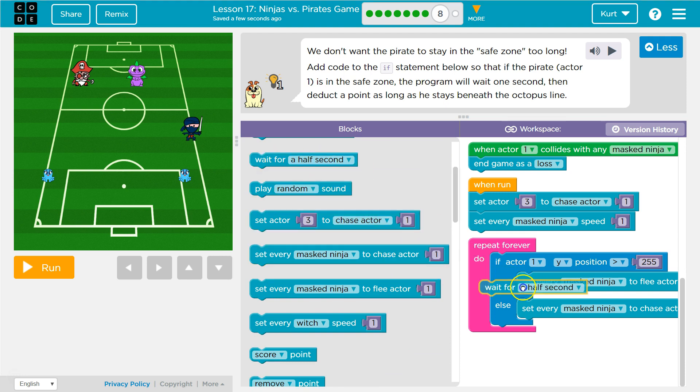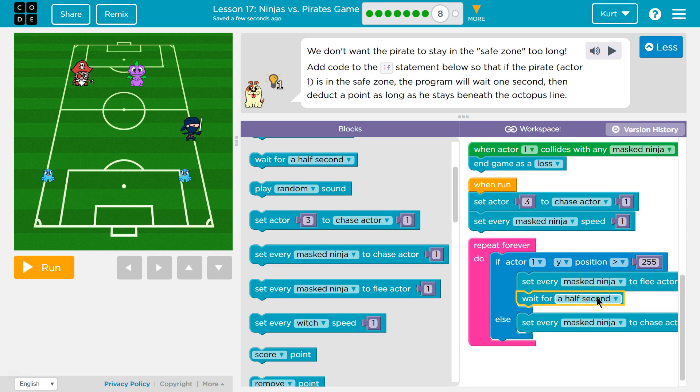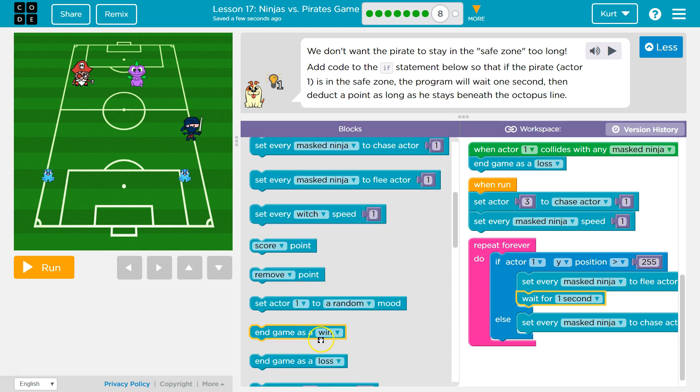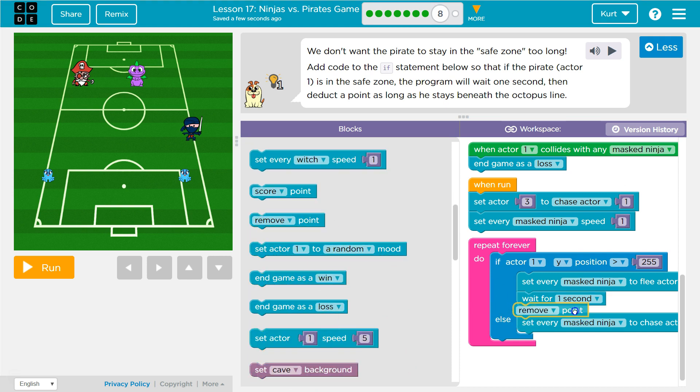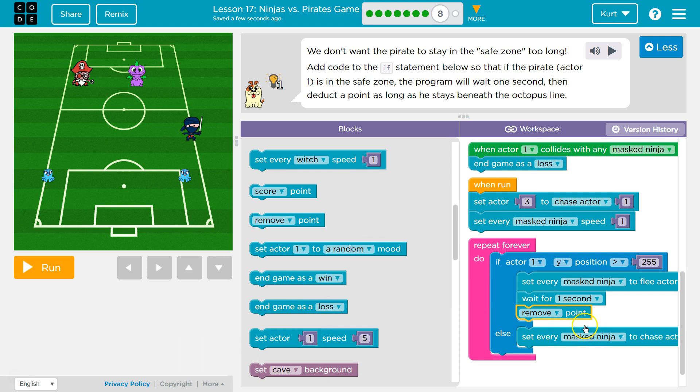Ooh, look at this. What if we put set every mass ninja, that's fine. And then let's do wait one second. And then after we wait one second, we should remove a point. Let's see if it works.